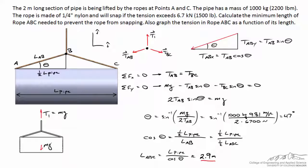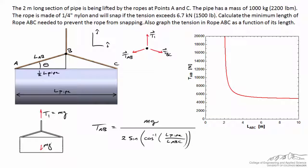If the rope was any shorter than 2.9 meters, it would snap. To make the graph, we use those two equations, substitute in theta as a function of the length ABC, and solve for TAB as a function of the length ABC. After making those substitutions we get a final expression, and graphing it confirms the same shape we drew qualitatively at the beginning. At 2 meters — the length of the pipe — the tension goes to infinity, and on the right side it asymptotes to 4,900 newtons, which equals one half Mg.